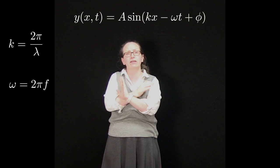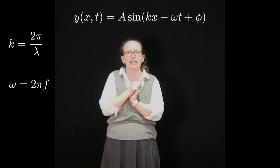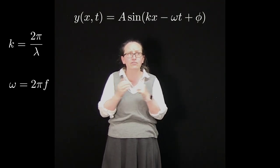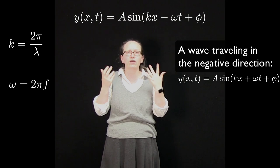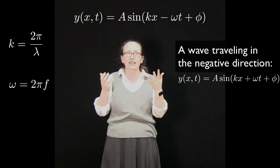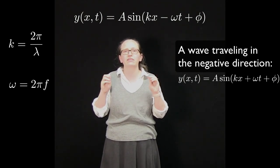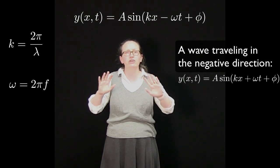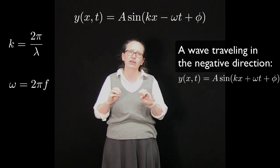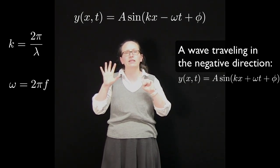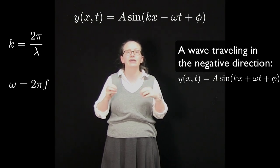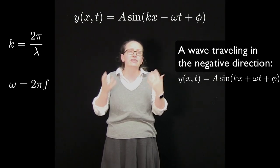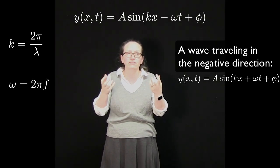If we wanted to change the direction of the wave so that it was going in the negative direction to the left, we'd write y(x,t) = A sin(kx + ωt + φ). So the wave is actually traveling in the negative direction if kx and ωt have the same sign. If they have opposite signs, then it's traveling in the positive direction.